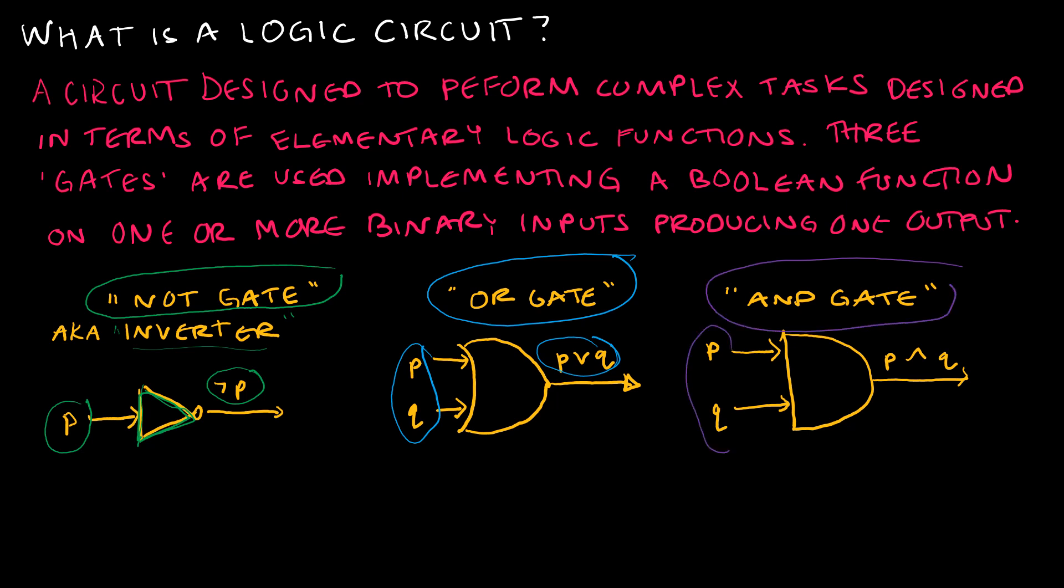The AND gate also takes two inputs. Notice this one is straight here while the OR gate was curved. The AND gate will have an output of the conjunction of the propositions, which is P and Q, whereas the OR gate gives us P or Q.